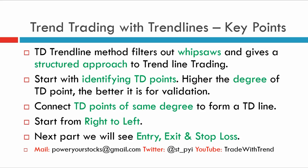Let me sum up the key points. In the next section, we are going to see entry, exit, stop loss, and targets — so don't miss the next part. Always remember to start from right to left — that is the main advantage of DeMarc trend lines, as we stay close to the current price action. Always connect the same degree of TD points: a second level TD point should be connected with another second level TD point, or a fifth level with another fifth level. Higher degree TD points always produce better trend lines — a level three TD point has higher significance than a level one, and so on.